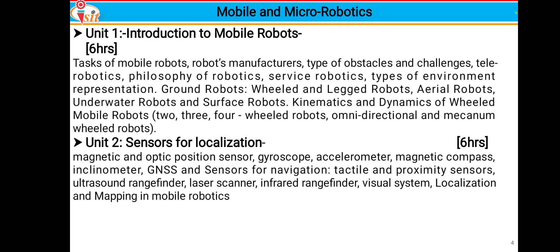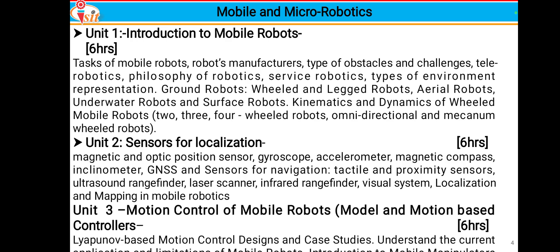Unit 2 covers sensors for localization. Recently we launched the Aditya mission, where different sensors are mounted — similar sensors will be studied here: magnetic and optic position sensors, gyroscopic sensors, accelerometer sensors, magnetic compass fitted on robots, inclinometer, GNSS, and sensors for navigation including tactile and proximity sensors, ultrasonic rangefinder, laser scanner, infrared rangefinder, and visual systems. Unit 2 also covers localization and mapping in mobile robots.